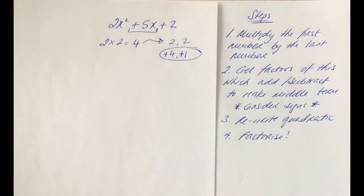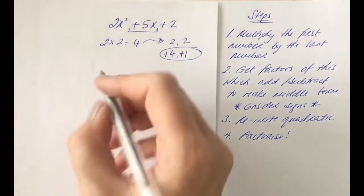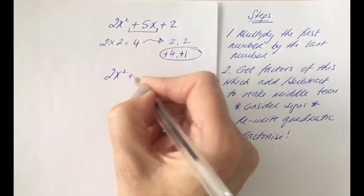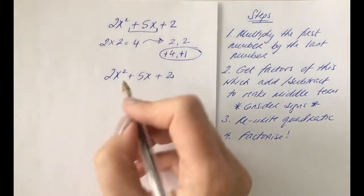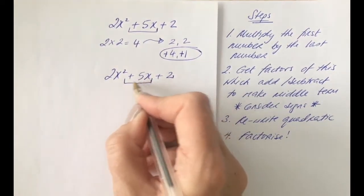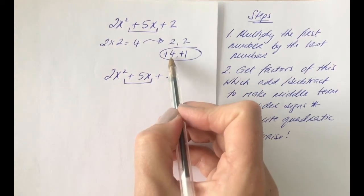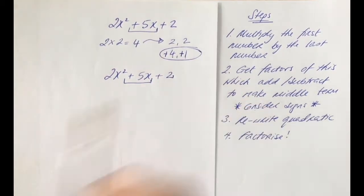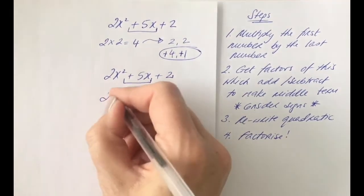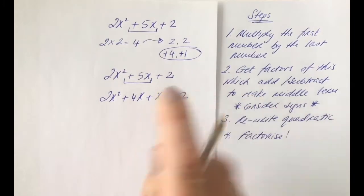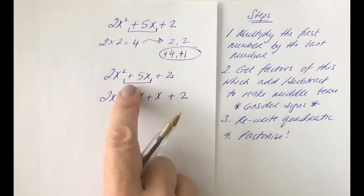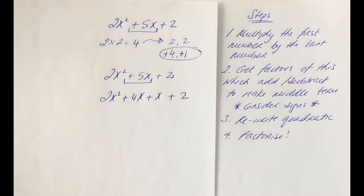So now step 3, we need to rewrite the quadratic. The quadratic we had was 2x squared plus 5x plus 2. But we're now going to rewrite this quadratic and instead of 5x, we're going to rewrite it as plus 4x plus 1x plus 2. So it's the very same as this, but we've just expanded out that middle term.